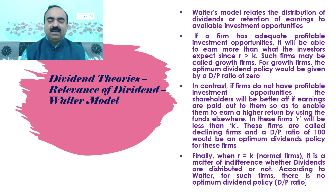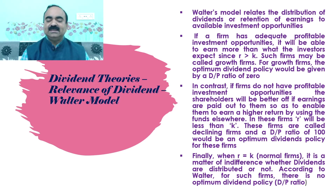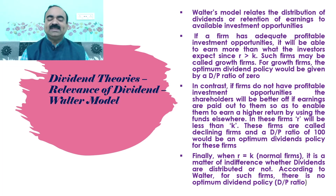Finally, when R is equal to K, in case of normal firms, it is a matter of indifference whether dividends are distributed or not. According to Walter, for such firms, there is no optimum dividend policy or D/P ratio.